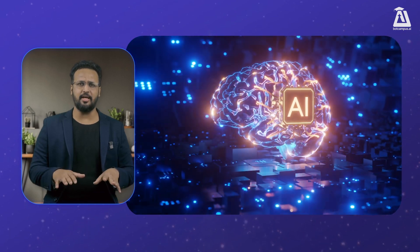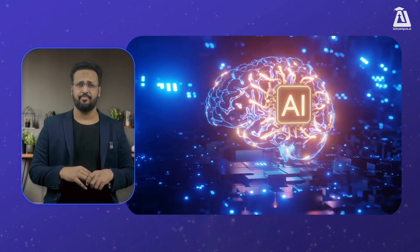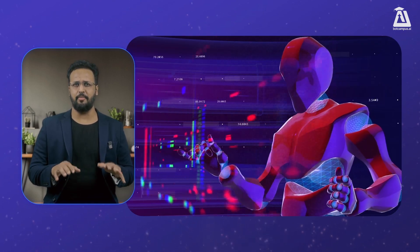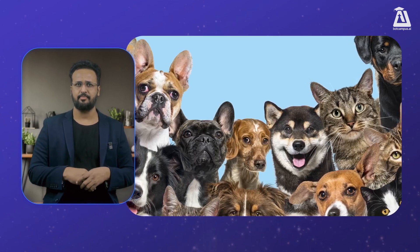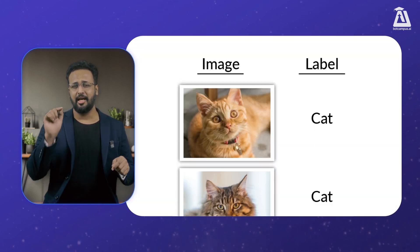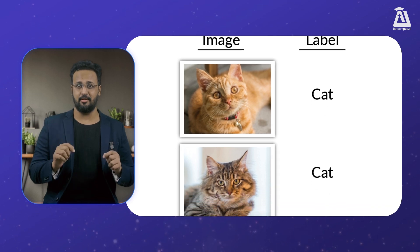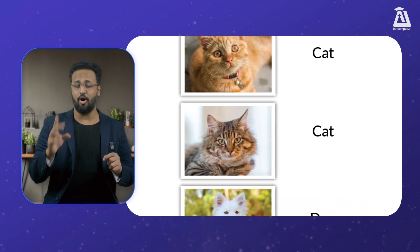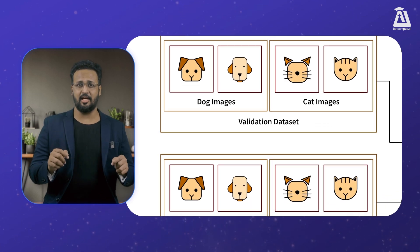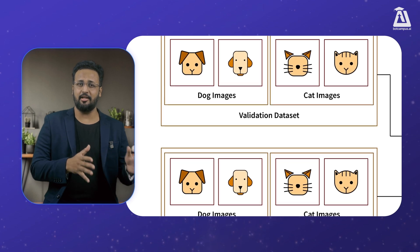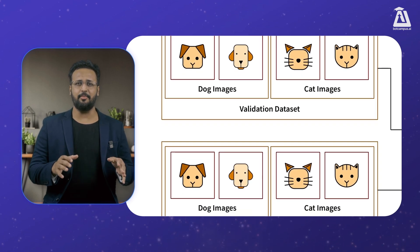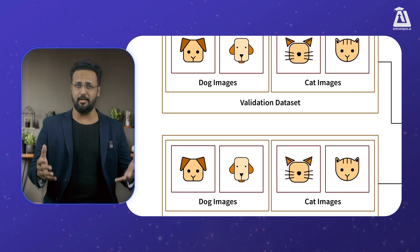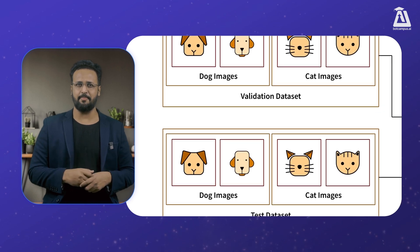Let me give you one more example to solidify this. We start by showing the computer lots of images of cats and dogs. Each picture has a label that says if it's a cat or a dog. This helps our computer buddy learn and remember. After the computer sees more and more labeled pictures, it begins to notice patterns — like cats usually have pointed ears and dogs have long noses.